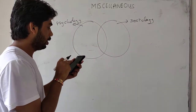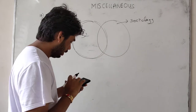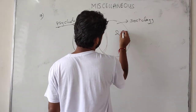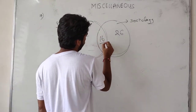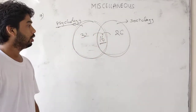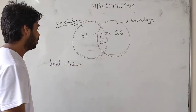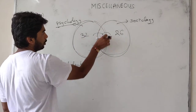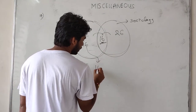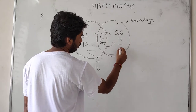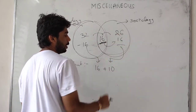Now, 32 students are studying physiology and 26 students are studying sociology. If 16 students are studying both, we use the Venn diagram approach. From the physiology set, 32 minus 16 gives 16 students only in physiology. From sociology, 26 minus 16 gives 10 students only in sociology. The total strength is the sum of all parts.